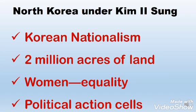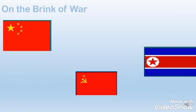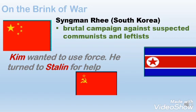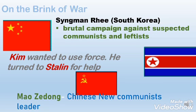This is when Kim's plan to unite Korea became evident. On the brink of war, South Korea appeared to be faltering. But President Syngman Rhee unleashed a brutal campaign against suspected communists and leftists. At first Kim wanted to use force; however, he needed support and so he turned to Stalin for help. Stalin supported his invasion plan and advised him to get support from China's new communist leader, Mao Zedong. He did and was now on the brink of war.